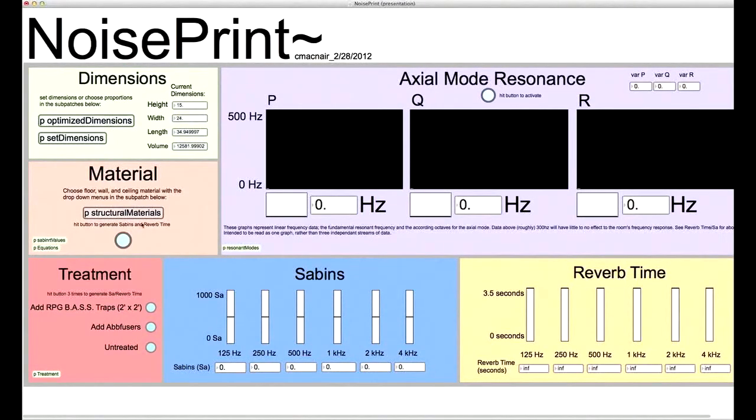Now I can generate the axial mode resonant values. This is one of three resonant modes of acoustical properties, the others being oblique and tangential. The graphs represent linear data from 0 to 500 Hz. Anything above 300 Hz has little to no effect on the room's resonance. P, Q, and R are simply variables that operate the equation, and the values on the graphs represent the fundamental resonant frequency and the octaves of it.